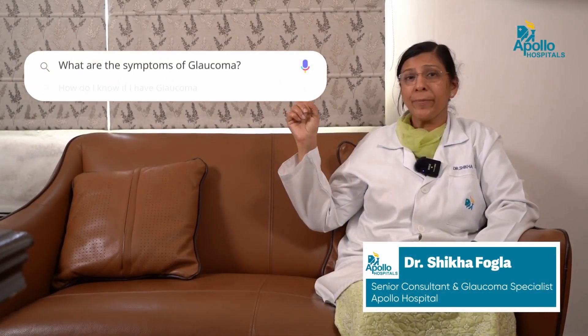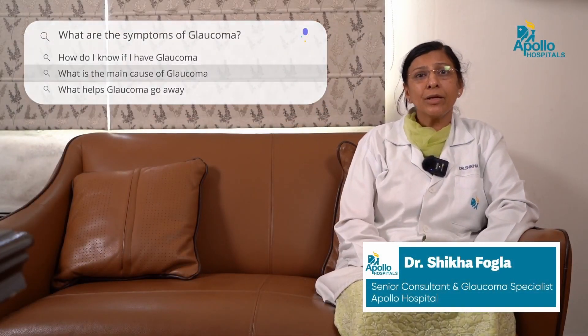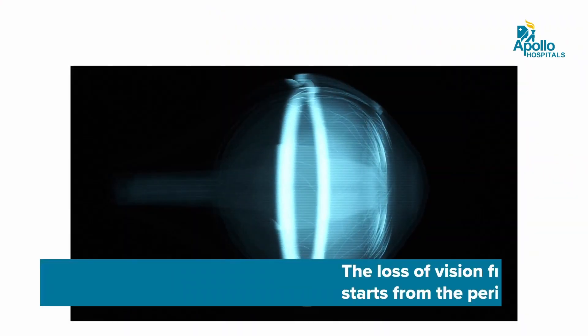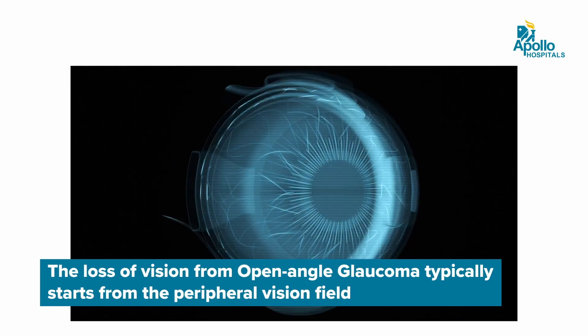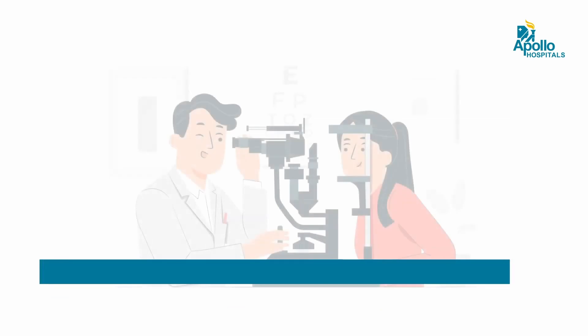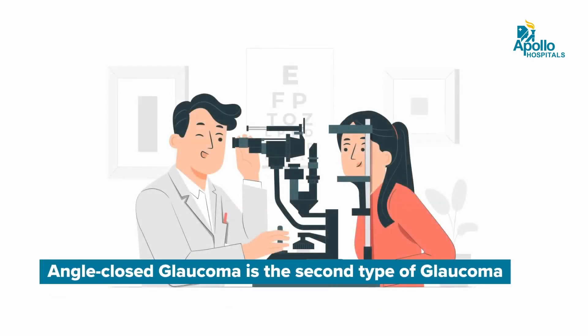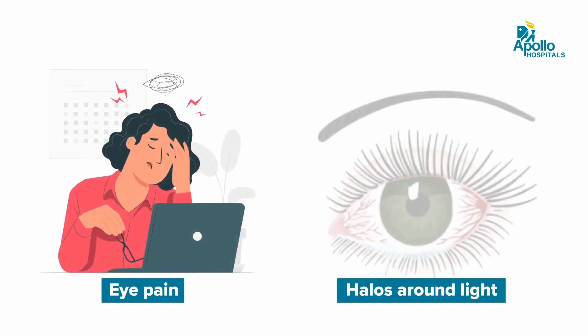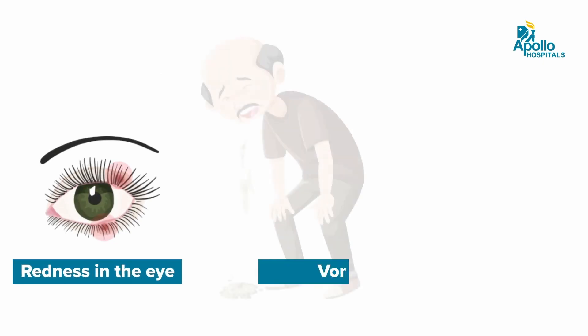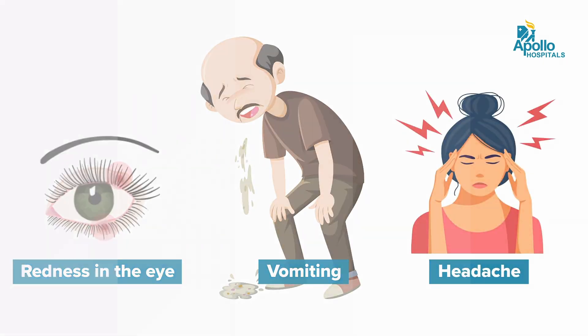What are the symptoms of glaucoma? Mostly glaucoma does not cause symptoms in the early stages, hence it is also known as the silent thief of sight in open angle glaucoma. In the later part of the disease, patients may complain of decreased vision or loss of field of vision. The second variety, angle closure glaucoma, can present with eye pain, halos around light objects, redness in the eyes, or even vomiting and headache if the eye pressure is very high.